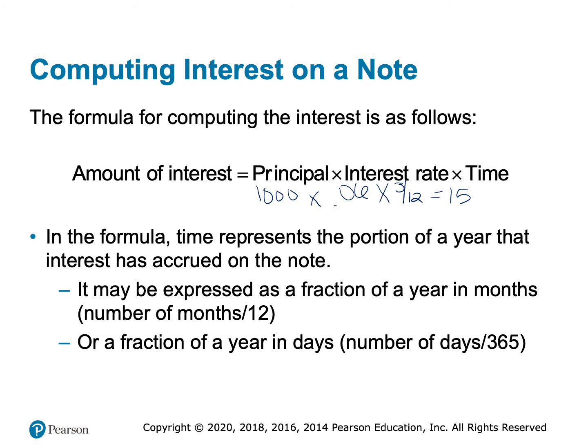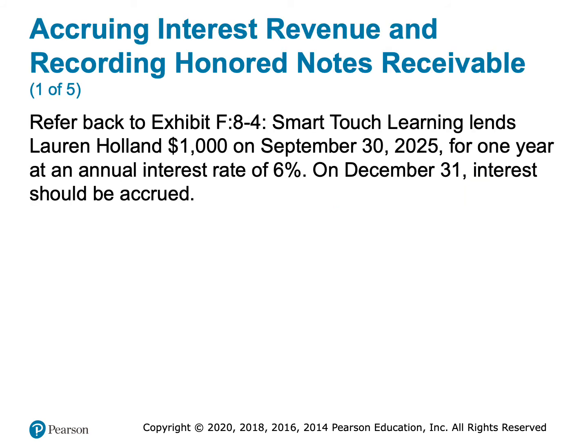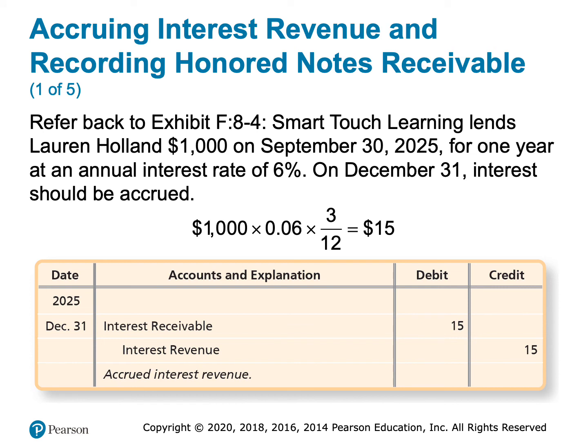Think of it this way: if Lauren walked in on December 31st and said she wanted to pay off her loan early, we would tell her she owes $1,000 plus $15 of interest — this is how much has accrued so far. So on December 31st, since we've earned $15 of interest, we record interest revenue — revenues are always credited. We haven't received the interest yet, but we're expecting to on September 30th of next year. So we debit interest receivable and credit interest revenue for $15.